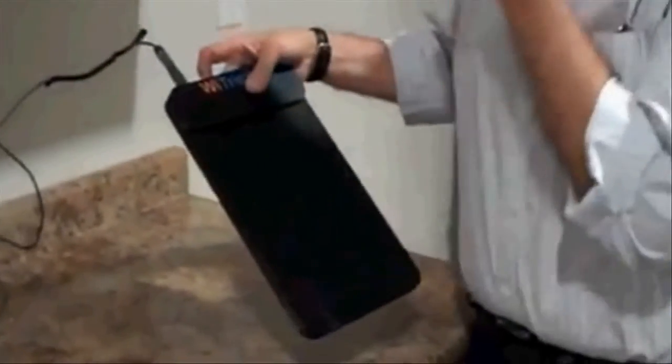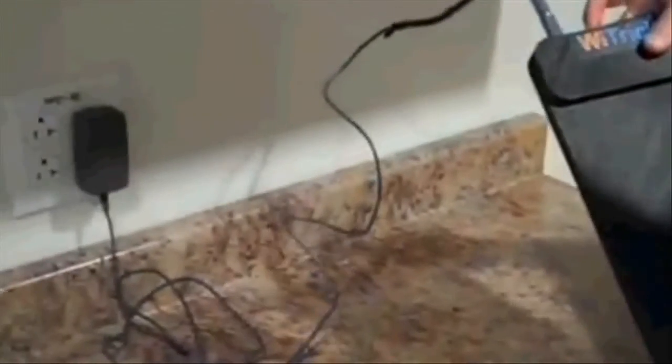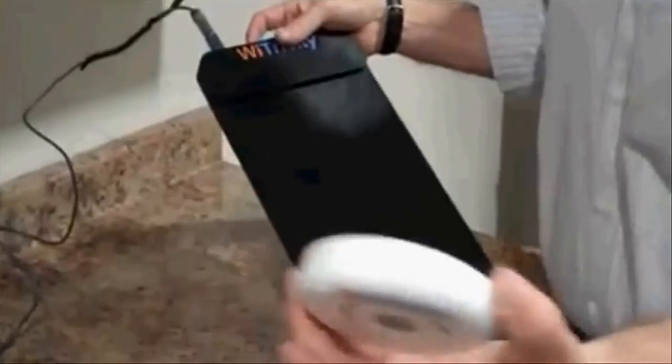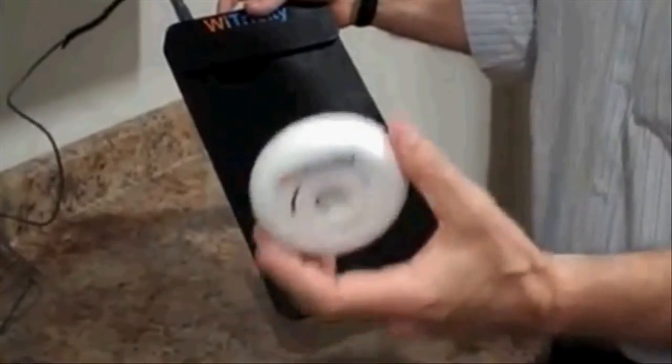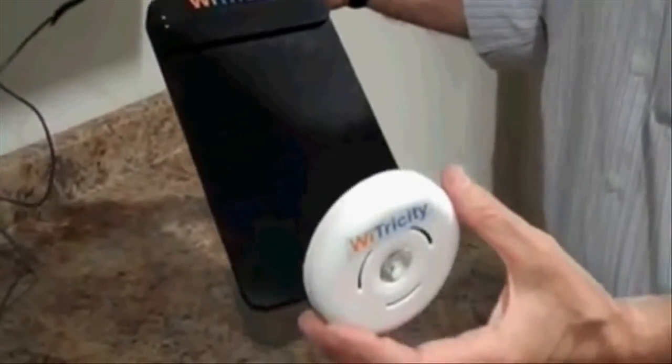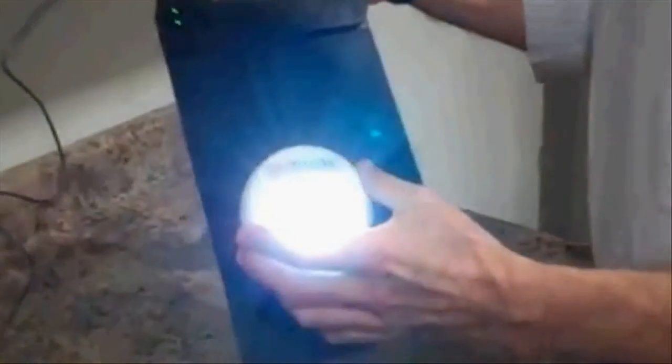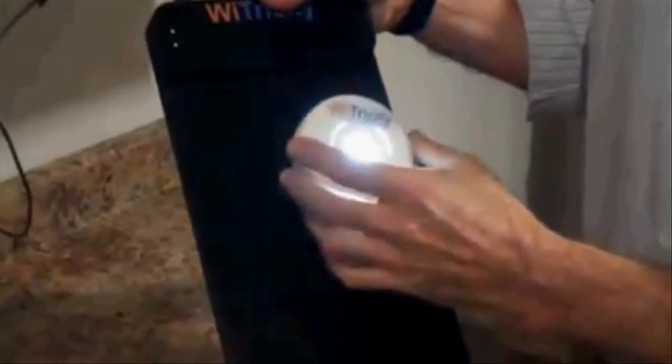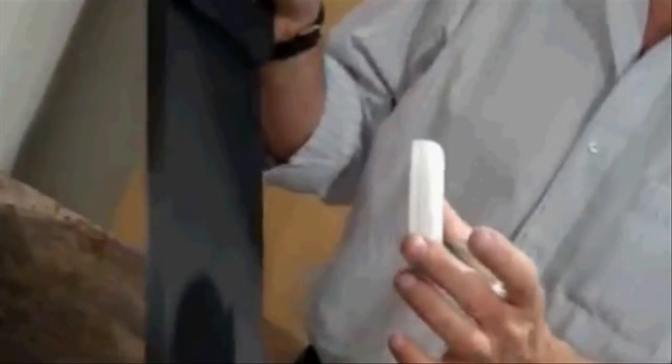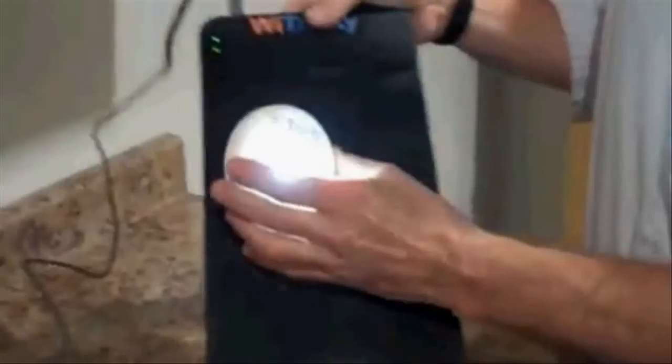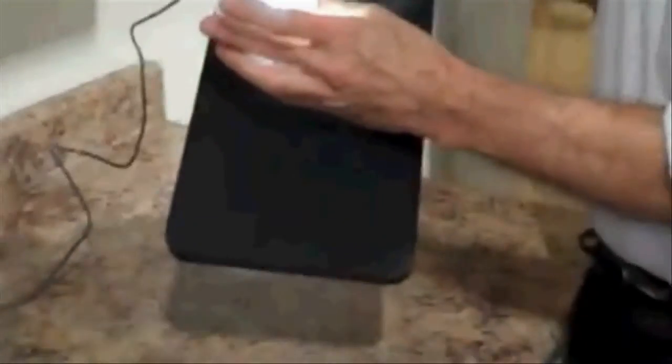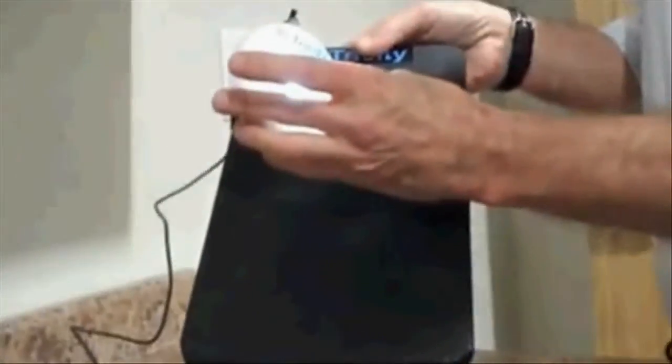Here's an example of a WiTricity pad that is plugged into the wall. And what you'll see in here is a coil and electronics that create a resonant magnetic field. And in the light, we have a coil and electronics as well that's designed to pick that up. And you'll see that when we get it within a certain distance, there's a lot of flexibility in terms of the distance that you can go from the pad and get it to continue to work. And as a matter of fact, it also works at different orientations.